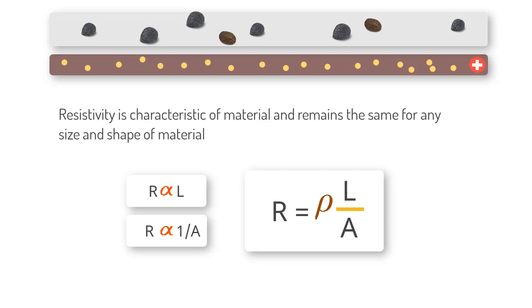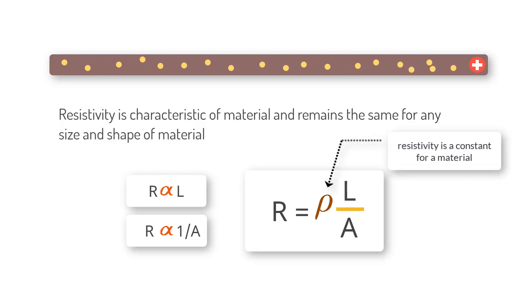Here you can see resistivity is characteristic of a material and remains the same for any size and shape of a given material but resistance of course changes with shape and size of the wire.